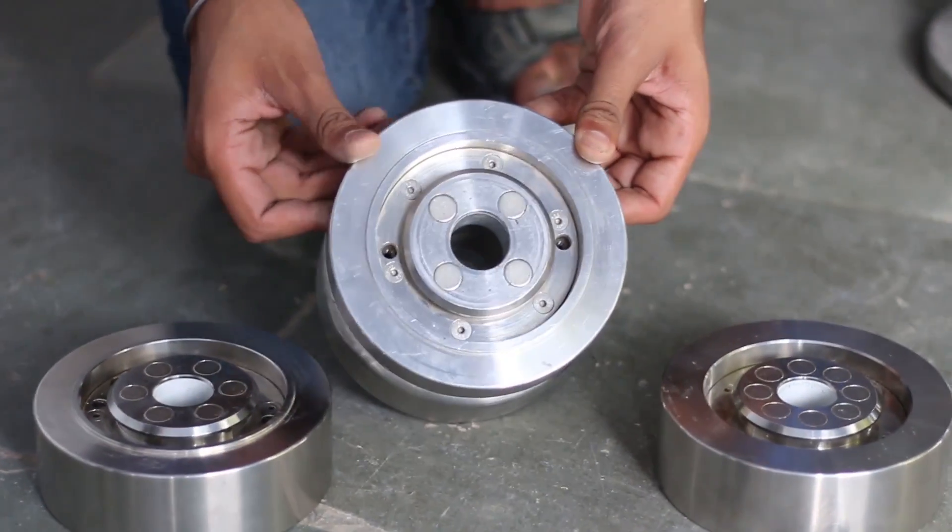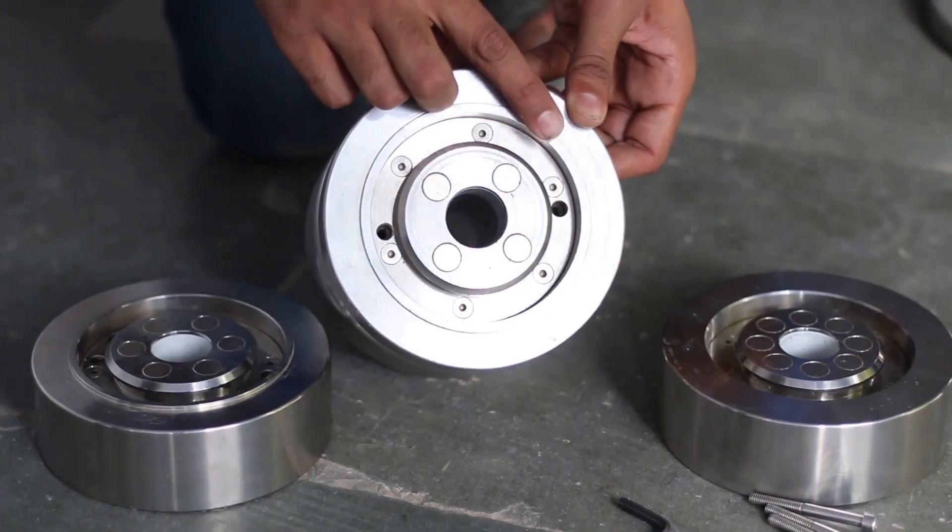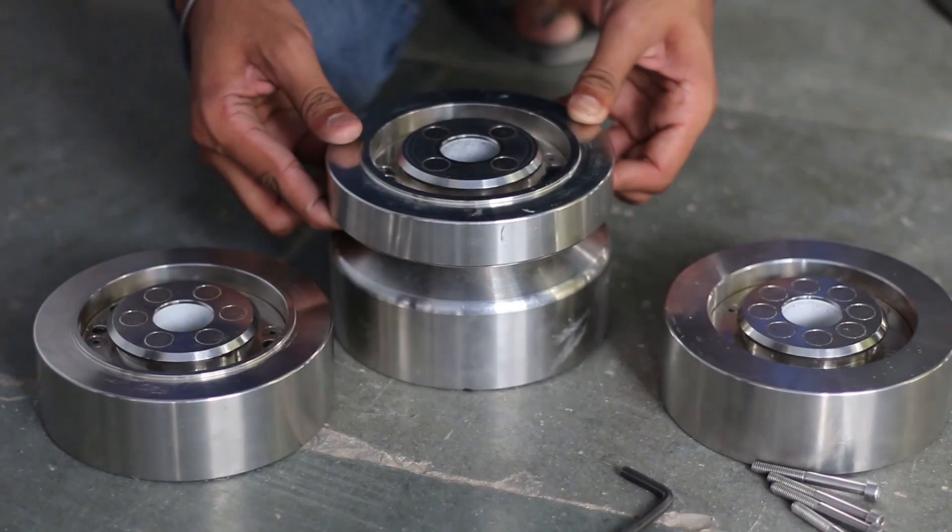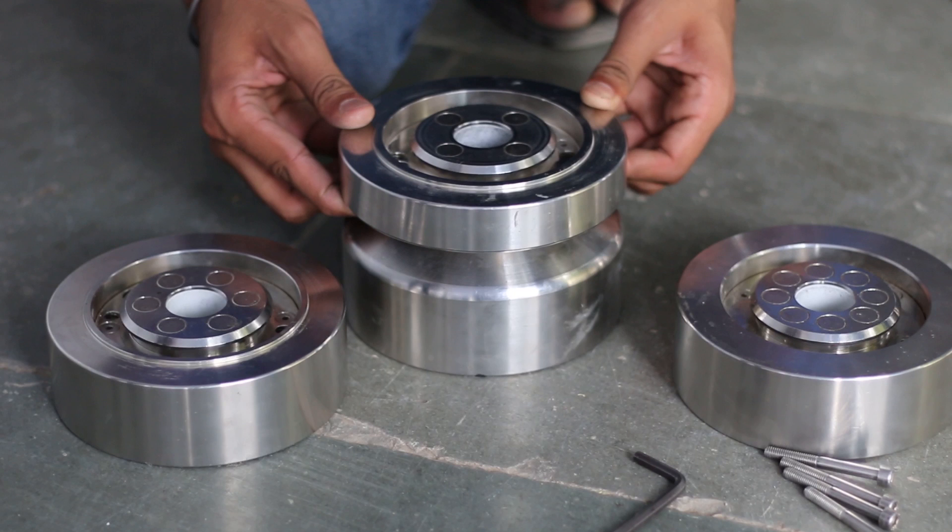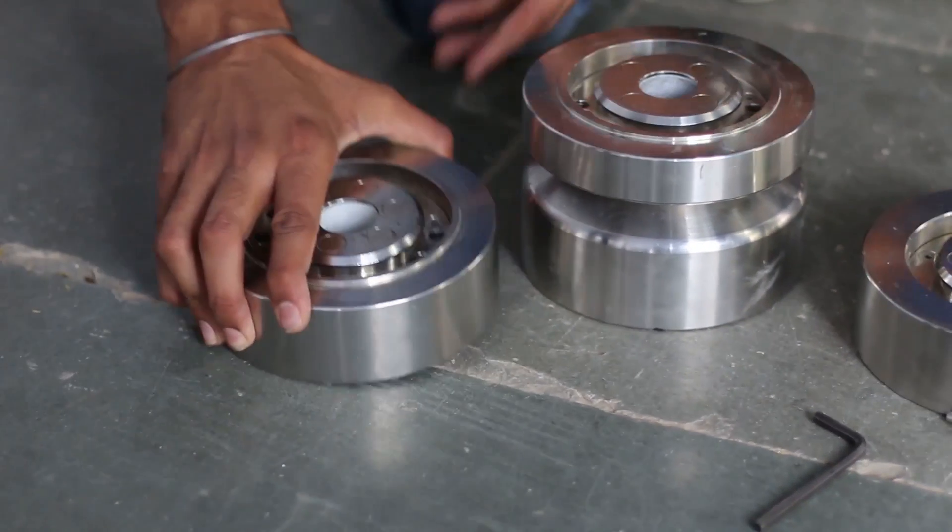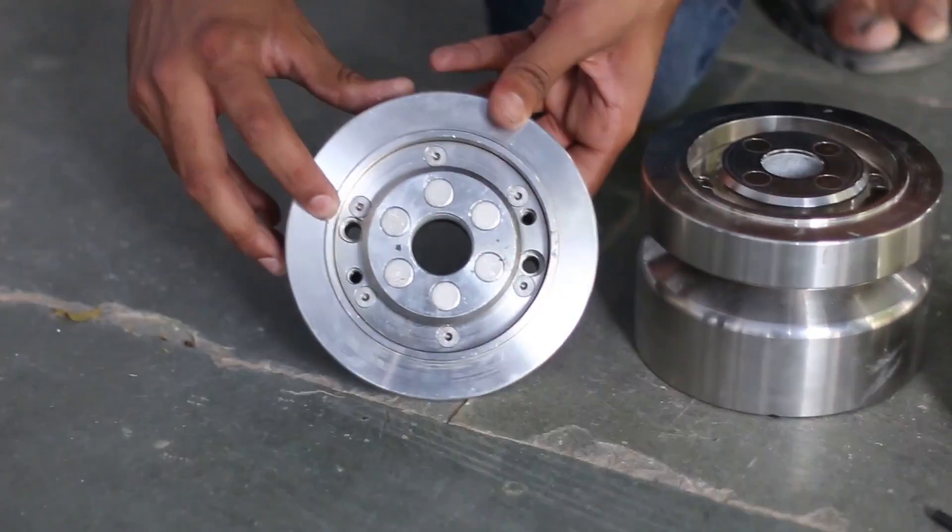This is the 10 kg weight and we have 2 more 5 kg weights. We can have 3 arrangements of 10 kg, 15 kg and 20 kg from these 3 weights. The assembly for the 20 kg weight is being shown here.